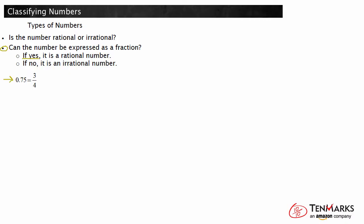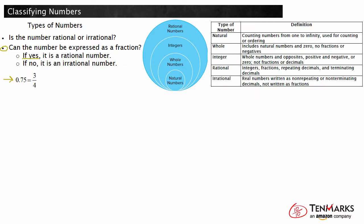Rational numbers can be broken down into a number of subgroups: integers, whole numbers, and natural numbers. Natural numbers are sometimes called counting numbers, as they begin with 1 and go on to infinity. These numbers are used for counting or ordering. A whole number includes natural numbers and 0. Whole numbers are not fractions or negatives. Integers are whole numbers and their opposites. These include both positive and negative numbers, and 0. Integers are not fractions or decimals.